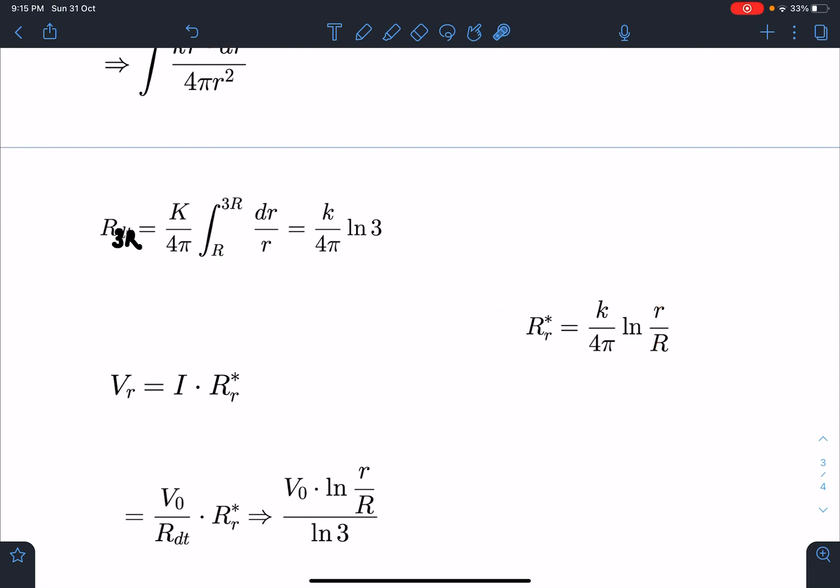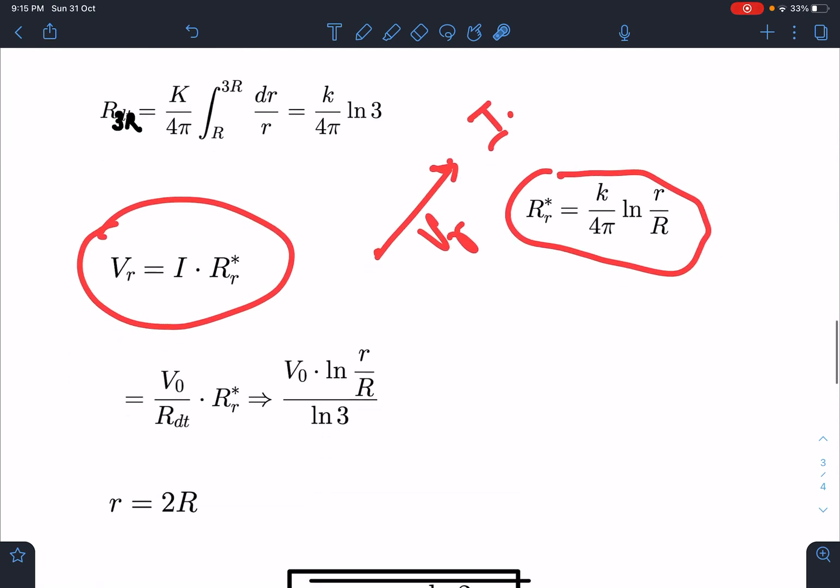Now I can write potential difference between 0 to r distance, which is V_r, and that must be equal to the same current I times resistance of this much part. If I apply that, I can substitute the value of V_0 by total resistance times resistance of that much length.